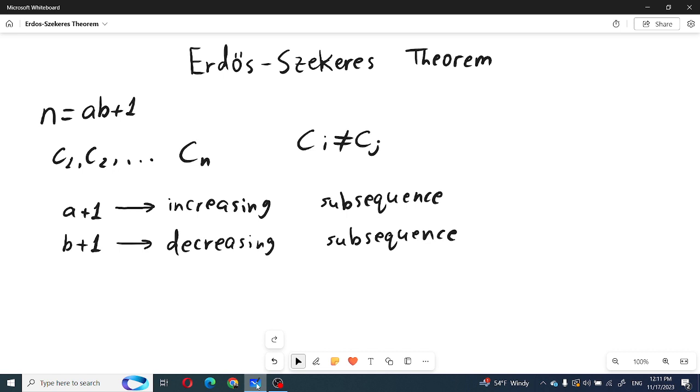that are all different, then we can always find at least a plus 1 length increasing subsequence and a decreasing subsequence which will have at least b plus 1 elements.